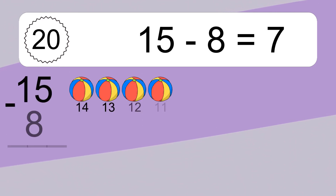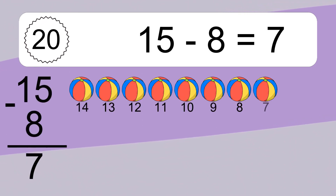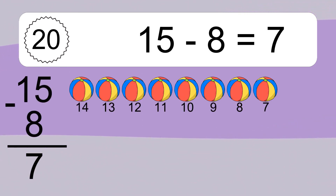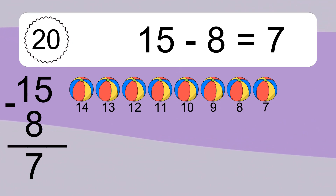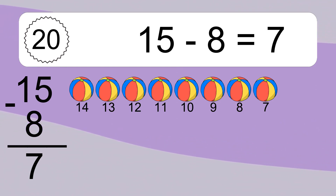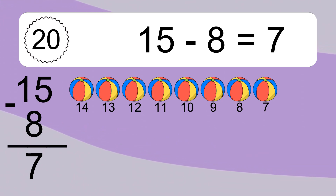15 minus 8 equals what? 15 minus 8 equals 7. Let's count it: 14, 13, 12, 11, 10, 9, 8, 7.